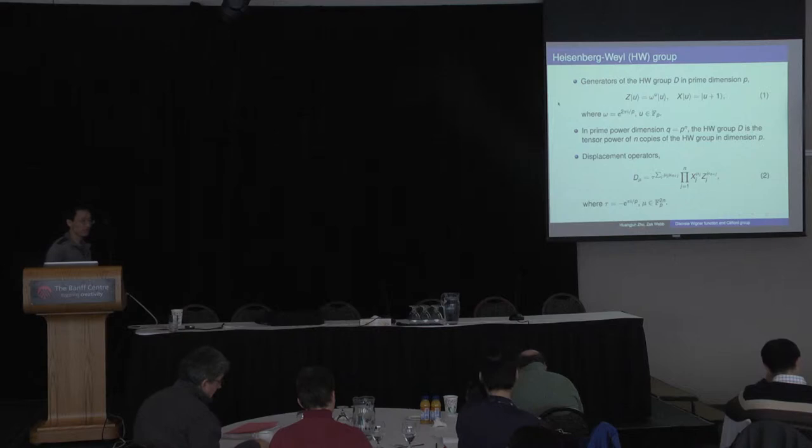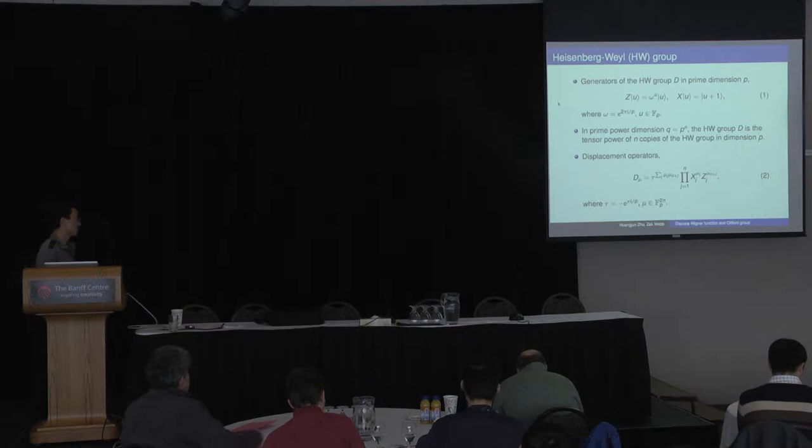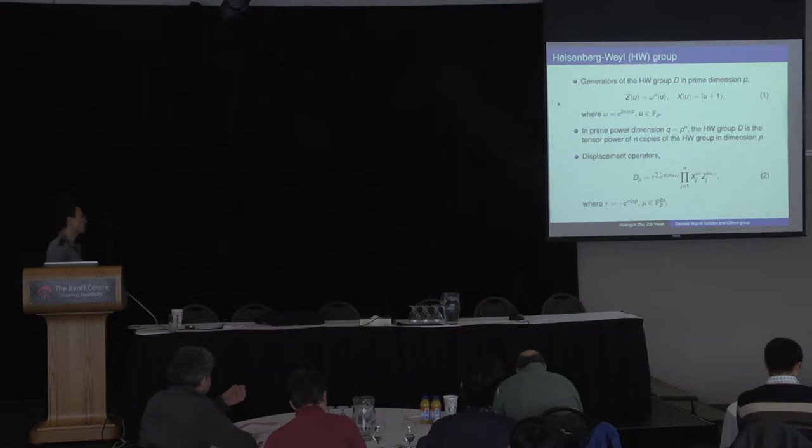First I will introduce these basic concepts. This is just about the Heisenberg-Weyl group, also known as the Pauli group, or generalized Pauli group. In prime dimension, it's generated by the phase operator and the cyclic-shift operator. In prime-power dimension, it's basically a tensor power of this group in prime dimension. The elements in the group are usually called displacement operators, also known as the Weyl operators.